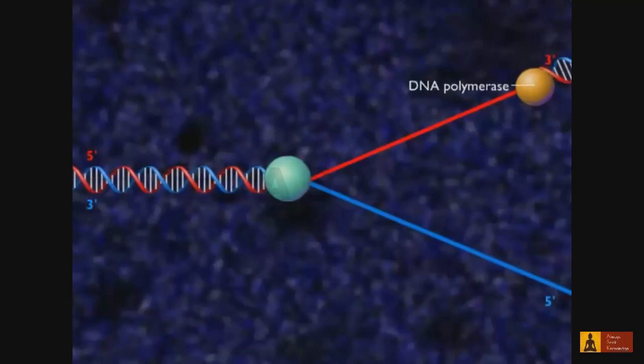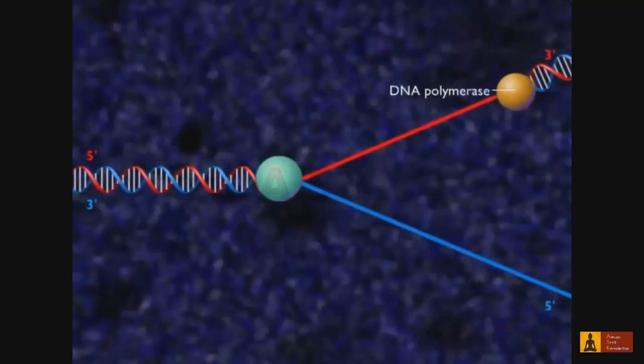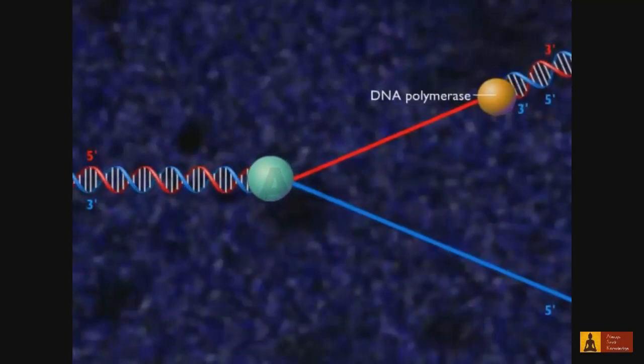DNA polymerase can only add new nucleotides to a free 3' end of a growing chain.